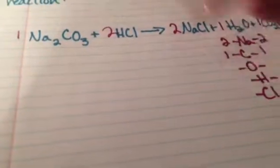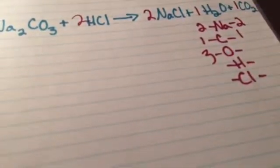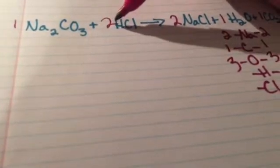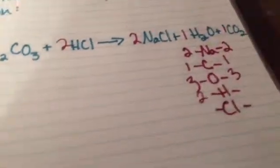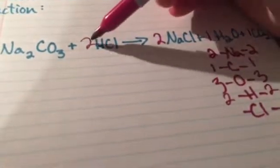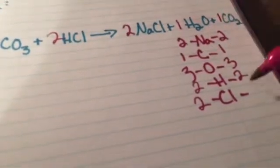On this side we have three oxygen. On this side we have one, two, three oxygen. On this side we have two hydrogen, on this side we have two hydrogen. And lastly, we have two chloride and two chloride. So that means this is balanced.